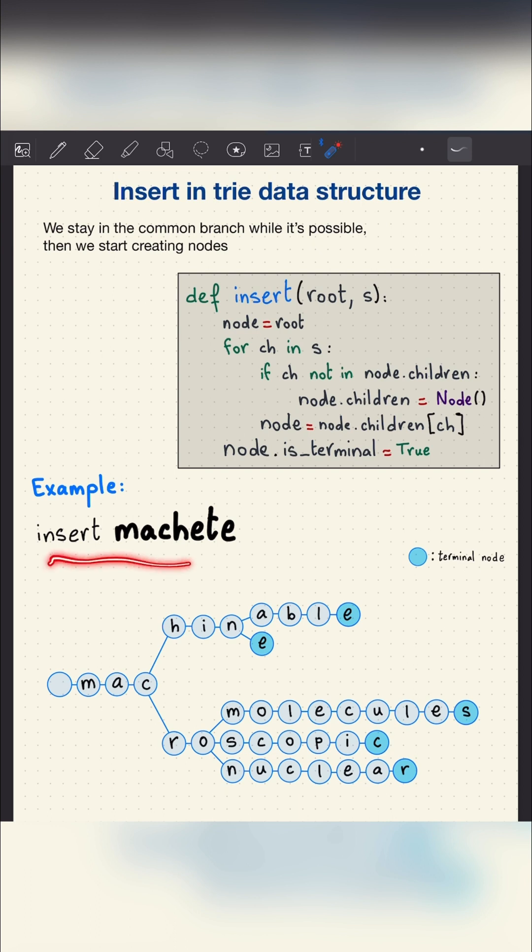Let's for example insert the word MASHATI. We start from the root. We first have the letter M, we already have it in our children. Then we have the letter A, we already have it, we don't create a new node. Then the letter C, we already have it. We keep walking in the current branch.